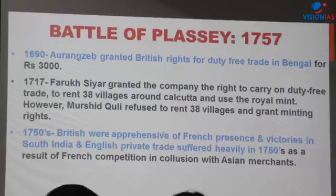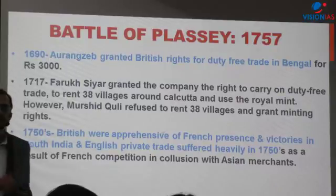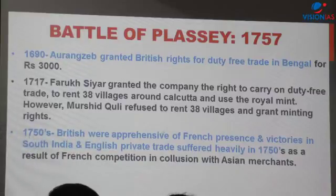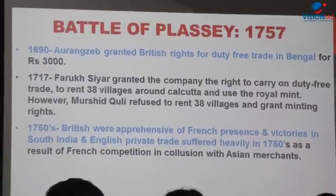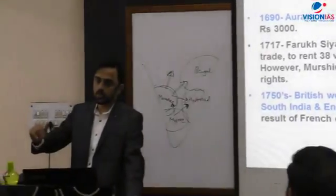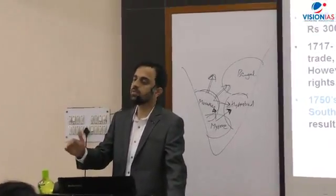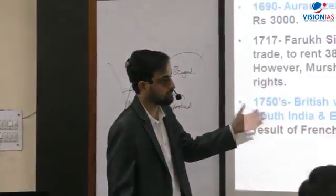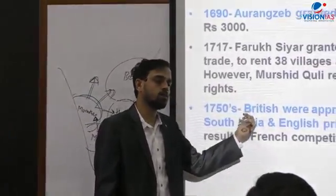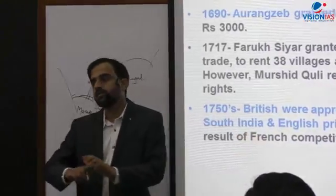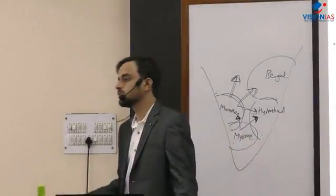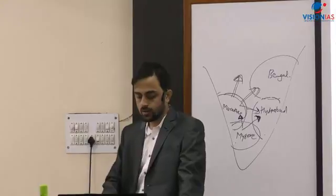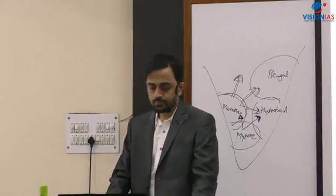Summarizing the causes of the Battle of Plassey: first, with the death of Aliwardi Khan, the matter precipitated because of the internal succession dispute — whenever a new Nawab comes to power without the stature of previous rulers, it gives external players an opportunity to intervene. Second, the bitter Anglo-French rivalry. Third, all of this was happening because the centralized Mughal rule no longer existed. These were some of the major reasons for the Battle of Plassey.